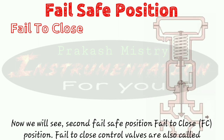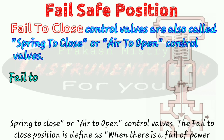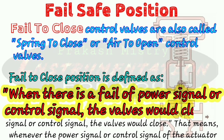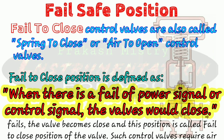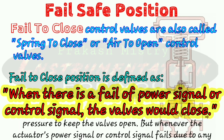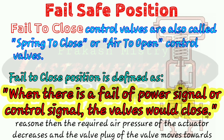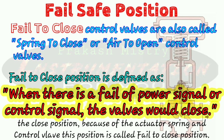The second fail-safe position is fail to close. Fail to close control valves are also called spring-to-close or air-to-open control valves. Fail to close position is defined as when there is a failure of the power signal or control signal, the valve would close. Whenever the power signal or control signal of the actuator fails, the valve becomes closed, and this position is called the fail to close position. Such control valves require air pressure to keep the valve open. When the actuator's power or control signal fails, the required pressure decreases and the valve plug moves toward the closed position because of the actuator spring.